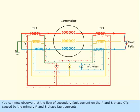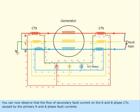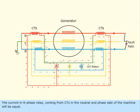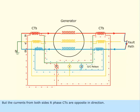You can now observe the flow of secondary fault current on the R and B phase CTs caused by the primary R and B phase fault currents. The current in R phase relay coming from CTs in the neutral and phase side of the machine will be equal. But the currents from both sides R phase CTs are opposite in direction.